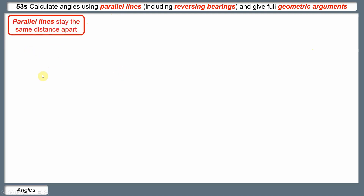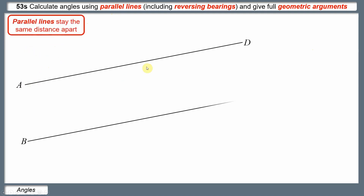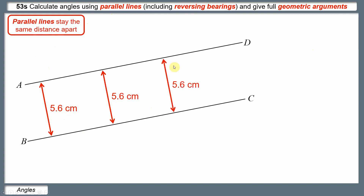Parallel lines always stay the same distance apart. So if AD and BC are parallel, if it's 5.6cm between them here, it will be 5.6cm between them anywhere along the length where we measure them. To mark AD and BC as parallel, we put on matching arrows pointing in the same direction.